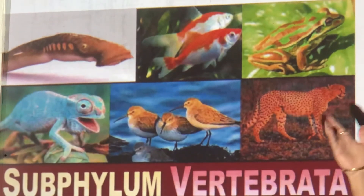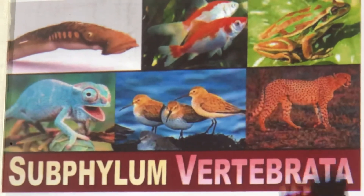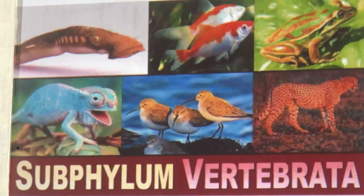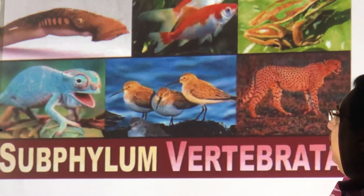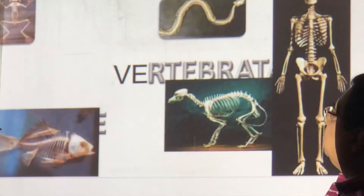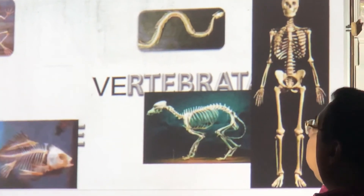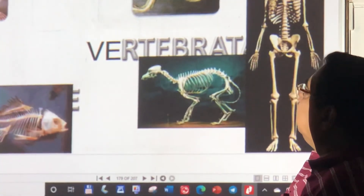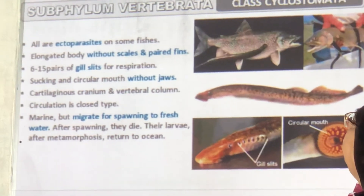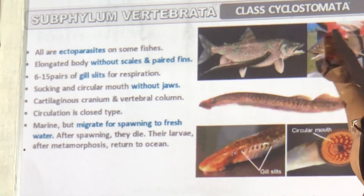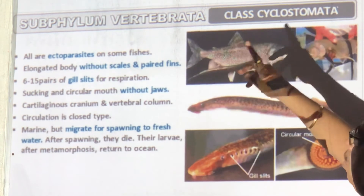Vertebrata — we will be studying all the classes under Vertebrata. In Vertebrata, the first class is Cyclostomata, meaning 'round mouth.' You can see how it sticks to the body of another fish. It is an ectoparasite — living outside the body and sucking from it. Notice the round mouth.